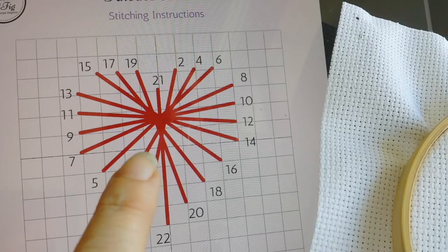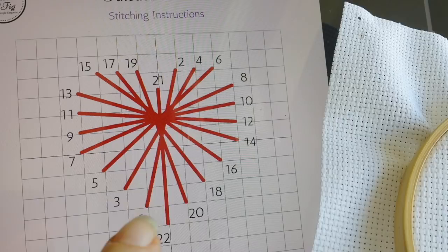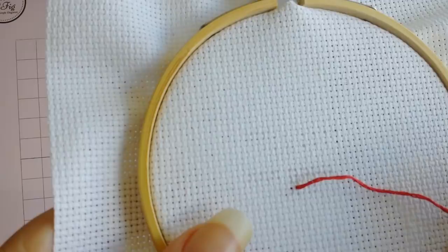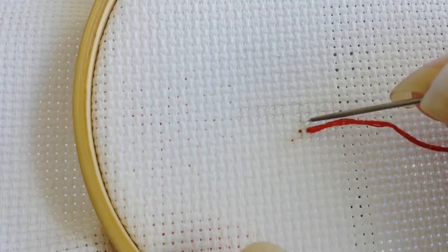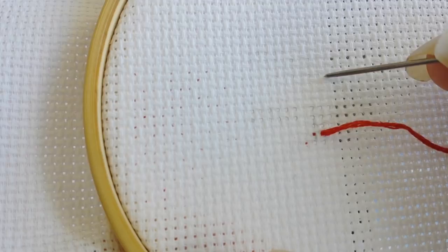You can see you're going to start here in the corner and you're going to go up one, two, three, four, five, six, seven stitches and over two. So you're going to go from number one to number two. So you're going to go up seven over two. And you can see here I've already started here. So I'm going to go up one, two, three, four, five, six, seven, and across two, one, two, and then down there.